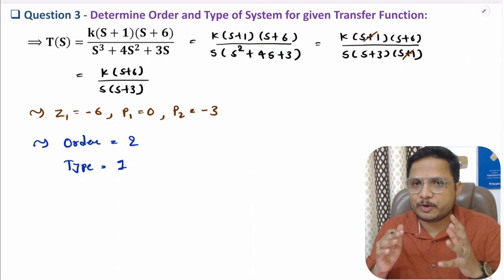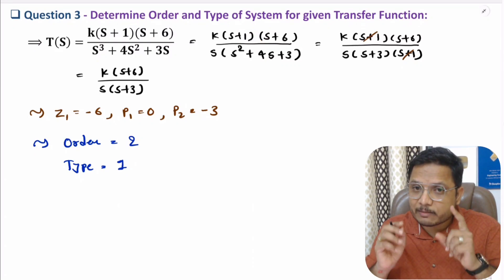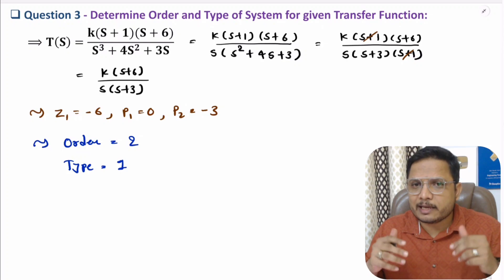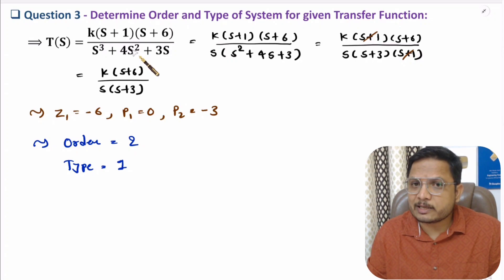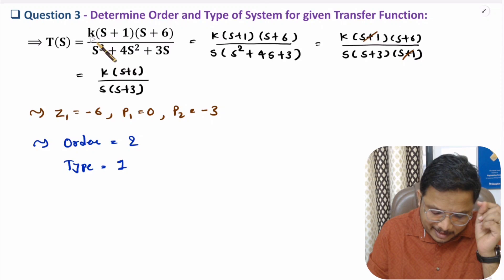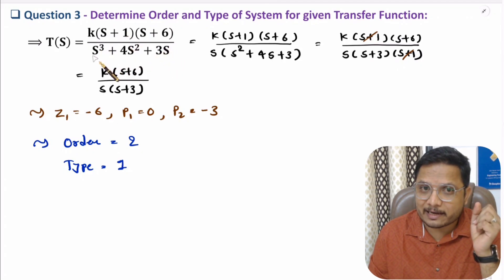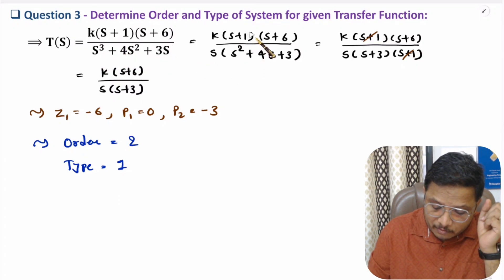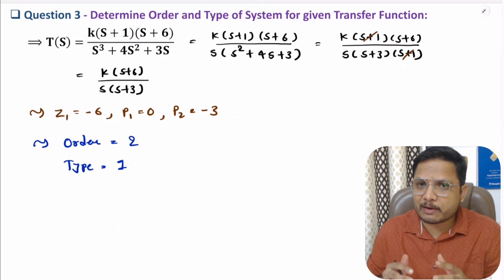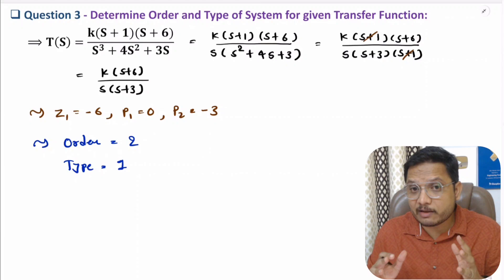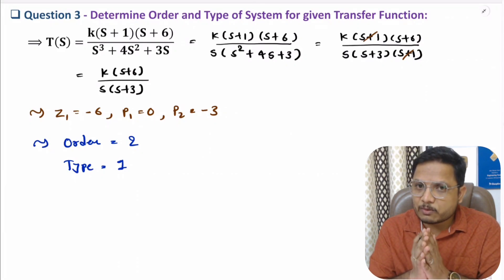Be careful when solving problems on order and type — always simplify the transfer function first. In a hurry you may make mistakes. I have seen this type of question in university and competitive examinations where students give a direct answer like 'third-order system,' but after simplification one root cancels and the order is 2. I hope you now have a fair enough idea of how to identify order and type of the system. Thank you so much for watching.